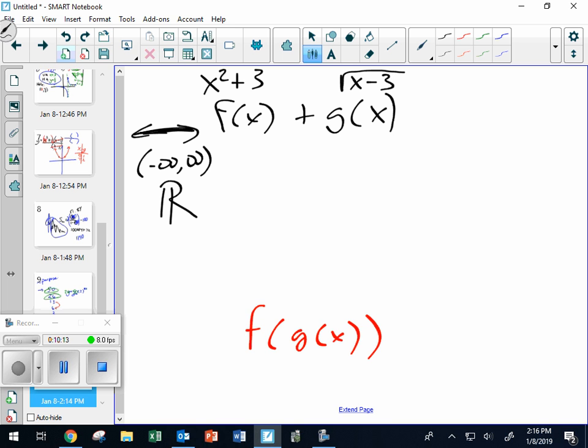Tell me what the domain of G is. X is greater than or equal to 3. Perfect. The way I like to do that is to take this and set it greater than or equal to 0, because what's underneath there needs to stay bigger than or equal to 0. And you did it just right where you added 3, and you got that. Now, I could say that on a number line. I could say that with set builder notation.